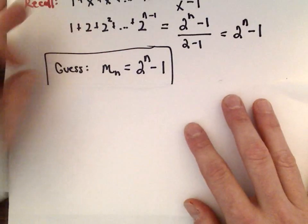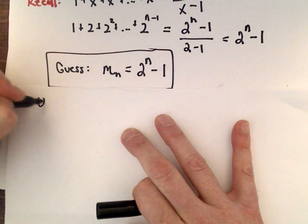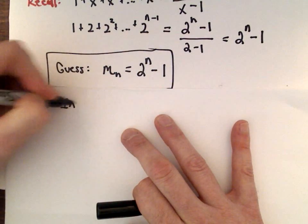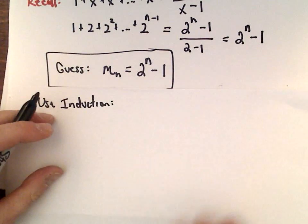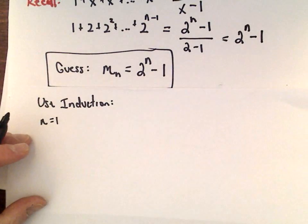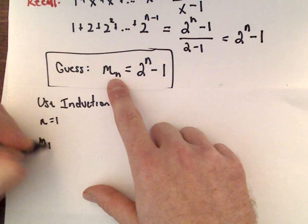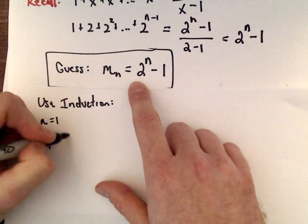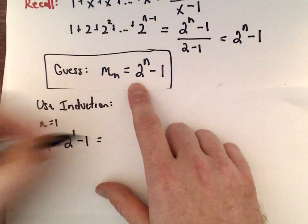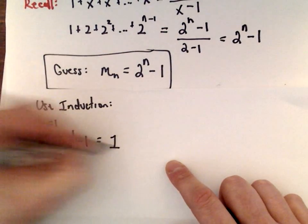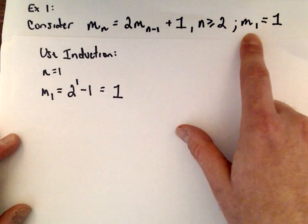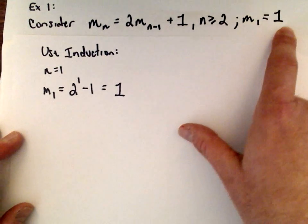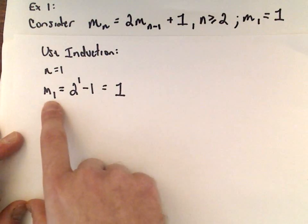Now let's prove it using induction. Notice our base case: when n equals 1, m sub 1 should equal 2 raised to the power of 1 minus 1. That's 2 to the 0, which is 1, and that agrees with our definition. It definitely works when n equals 1, our formula is correct.